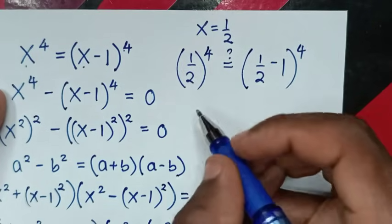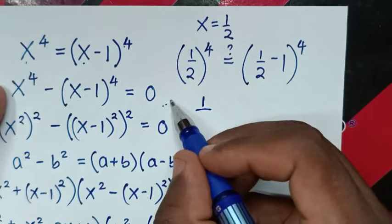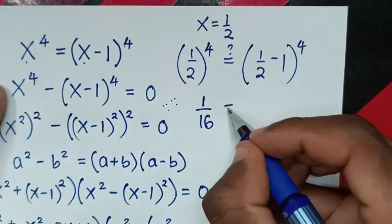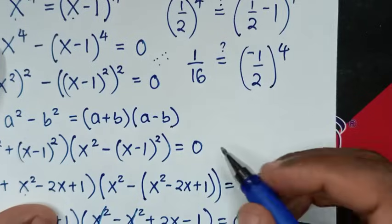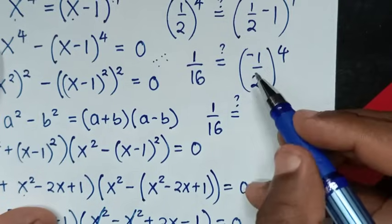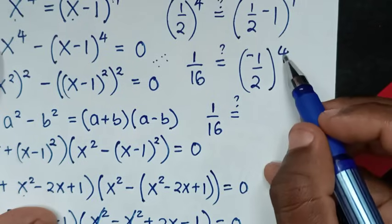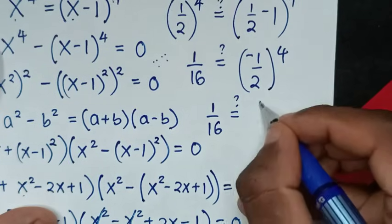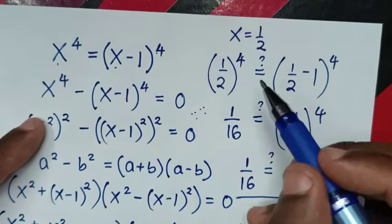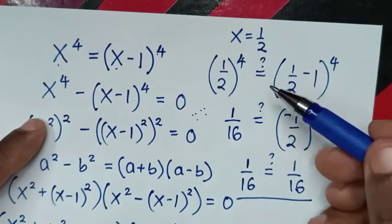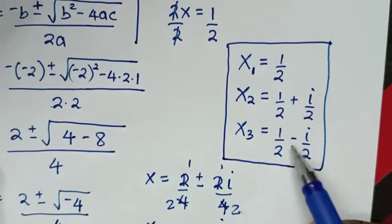One half to the power 4 is 1 over 2 to the power 4, which equals 1 over 16. On the right side, one half minus 1 is negative one half, and negative one half to the power 4: since the power is even, the negative becomes positive, giving 1 over 16. Left side equals right side, so x equals one half is confirmed. The complex values x equals one half plus i over 2 and one half minus i over 2 are also valid solutions.